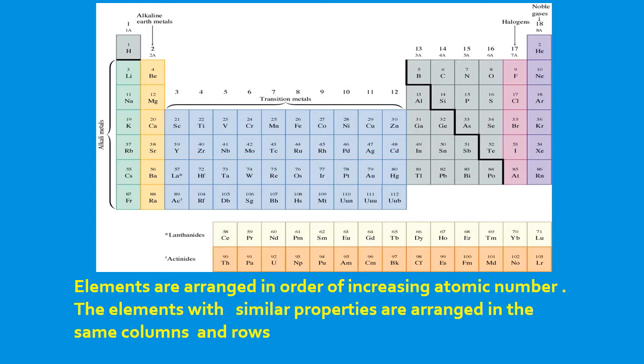The elements are arranged in increasing atomic number as we can see here. We go from 3 to 4 and we continue at 5, 6, 7, 8, 9, 10 as we go along, and elements with similar properties are can be found in columns and rows.